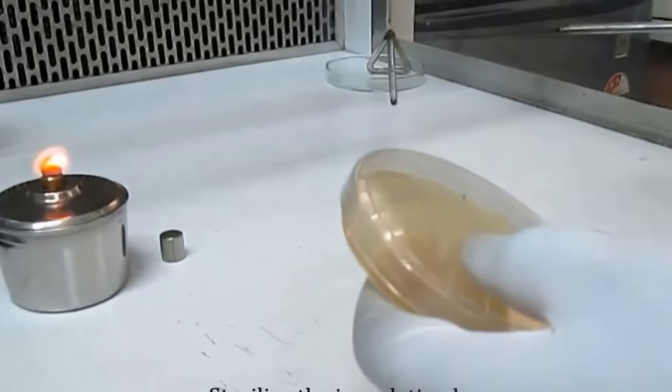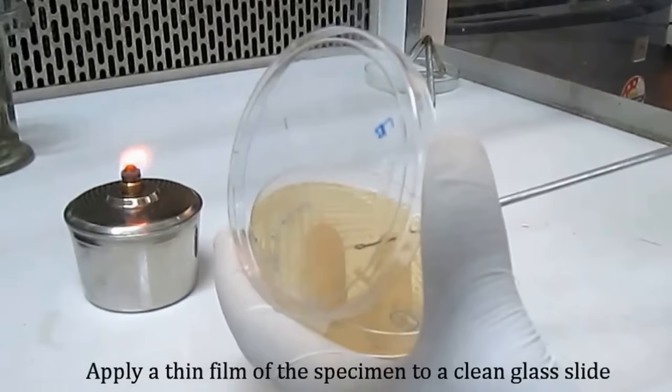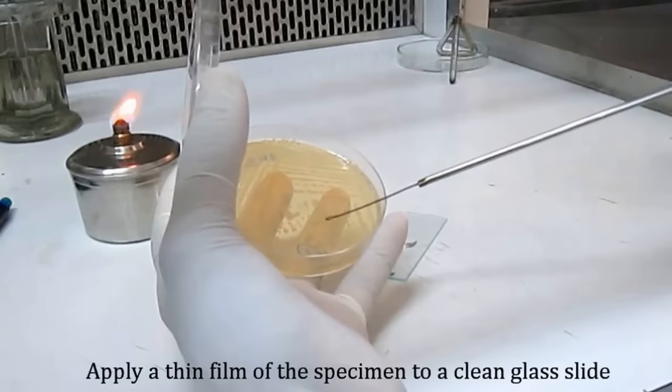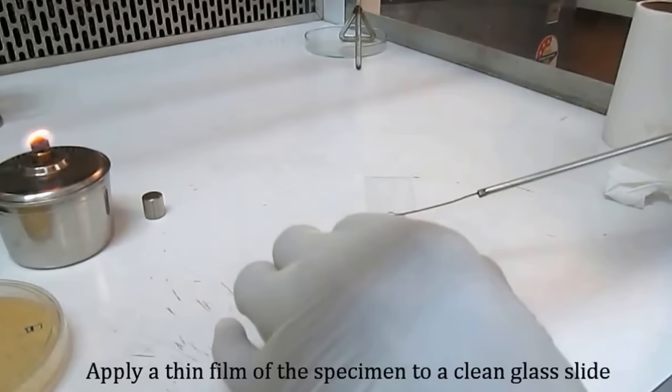Then pick the colonies of bacteria from the bacterial culture with the help of the inoculating loop and place it over the water drop. By slight mixing, form a smear on the slide.